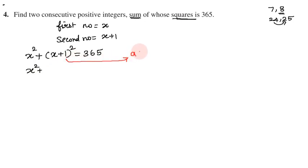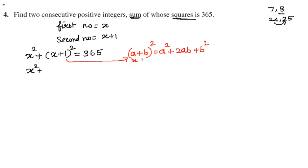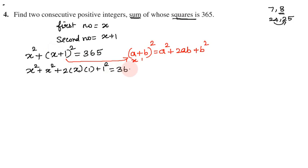We will use the a plus b whole square formula: a plus b whole square equals a squared plus 2ab plus b squared. Here, a is x and b is 1. So we expand: a squared is x squared, plus 2ab is 2 into x into 1, plus b squared is 1 squared. This expands equal to 365.